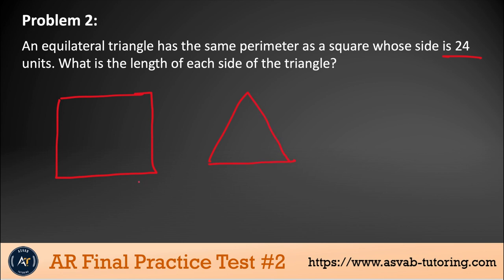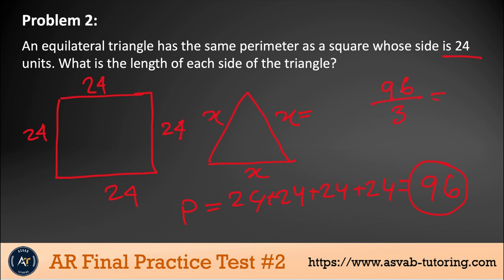An equilateral triangle means a triangle with all sides the same. A square also has all sides the same, but a square has 4 sides and a triangle has 3 sides. Each side of the square is 24. The perimeter of the square is 24 + 24 + 24 + 24 = 96. Since this perimeter equals the perimeter of the triangle, divide 96 by 3. That gives you 32 units. So make sure that you understand this problem.